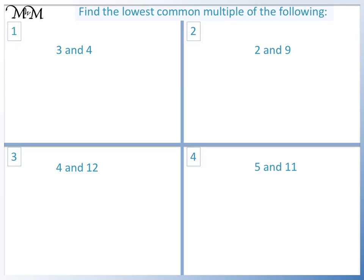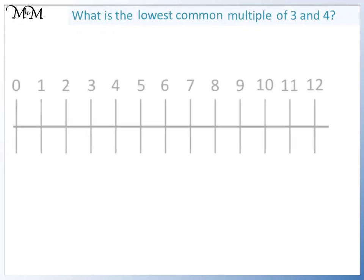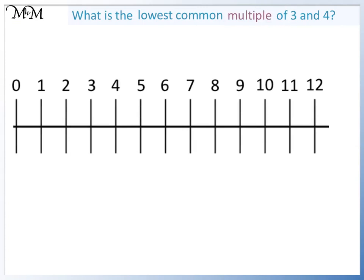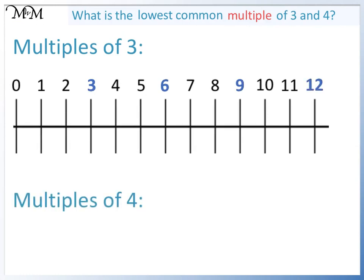Question 1. Multiples of 3 are 3, 6, 9 and 12. Multiples of 4 are 4, 8 and 12. The lowest common multiple is 12.